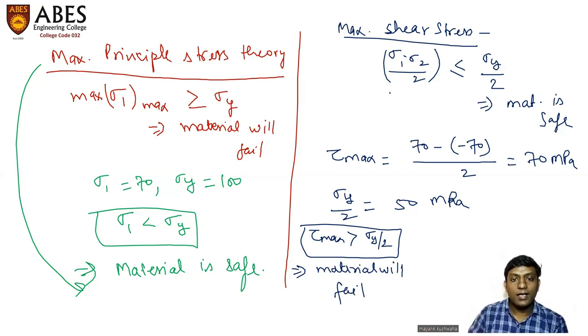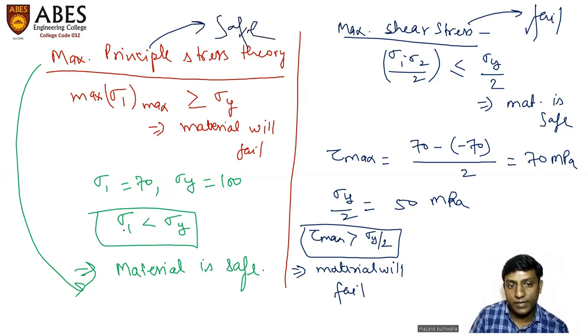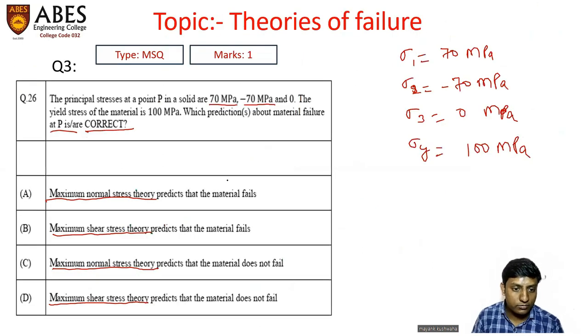So we see that tau max is greater than sigma y by two, which implies that material will fail. So maximum shear stress theory says that material will fail. Maximum principal stress theory says that material will be safe. So let us see what are the options.